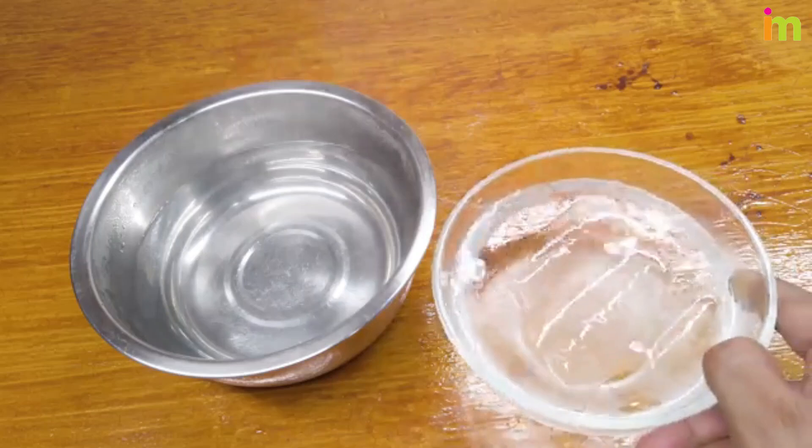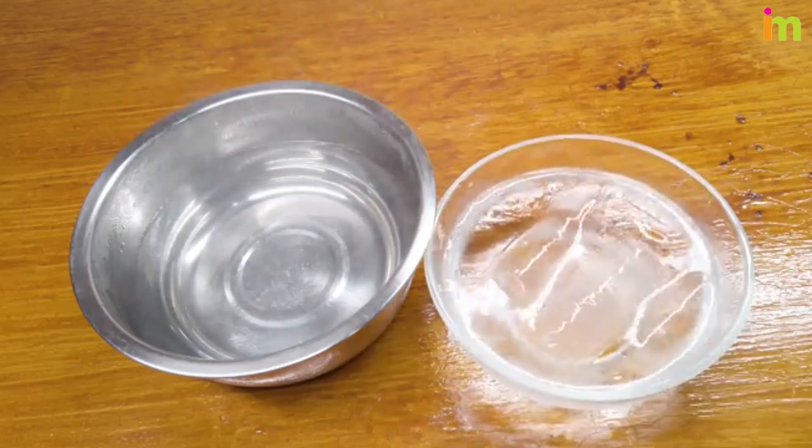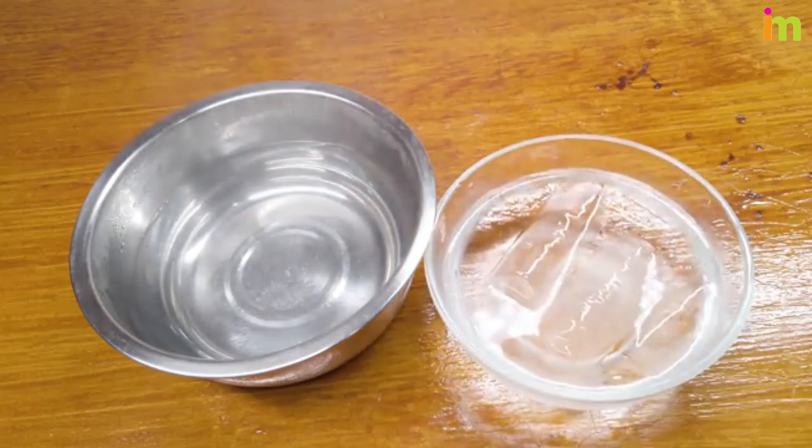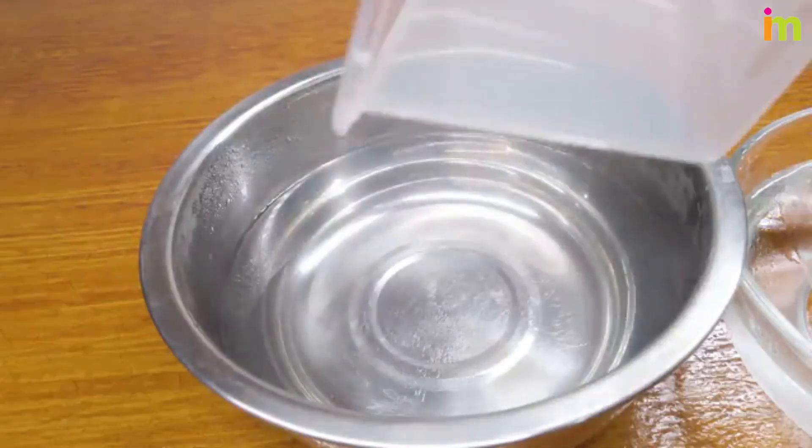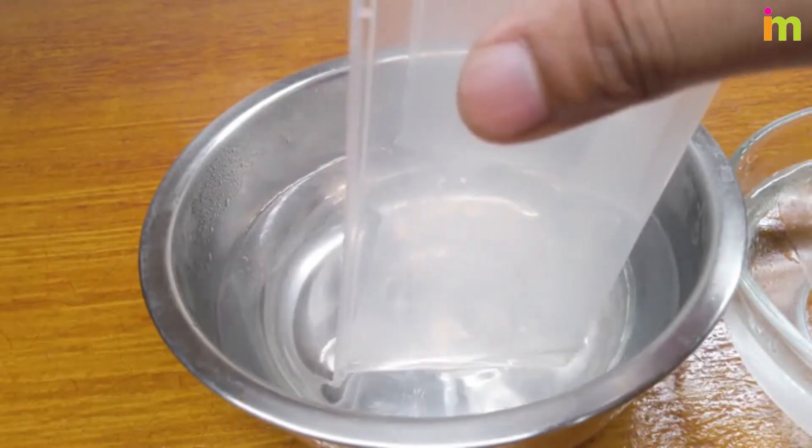Then fill a container with cold water and keep it nearby so you can set the plastic after you've repaired the crack. The water should not be boiling when you submerge the plastic.